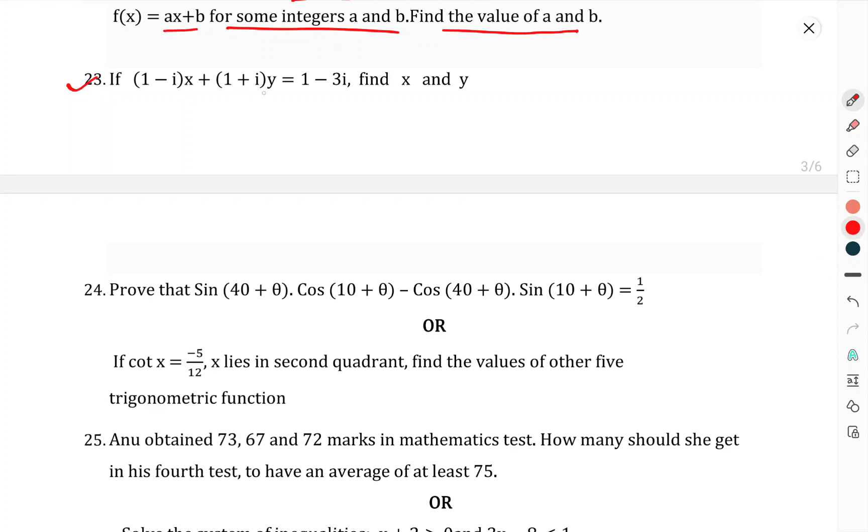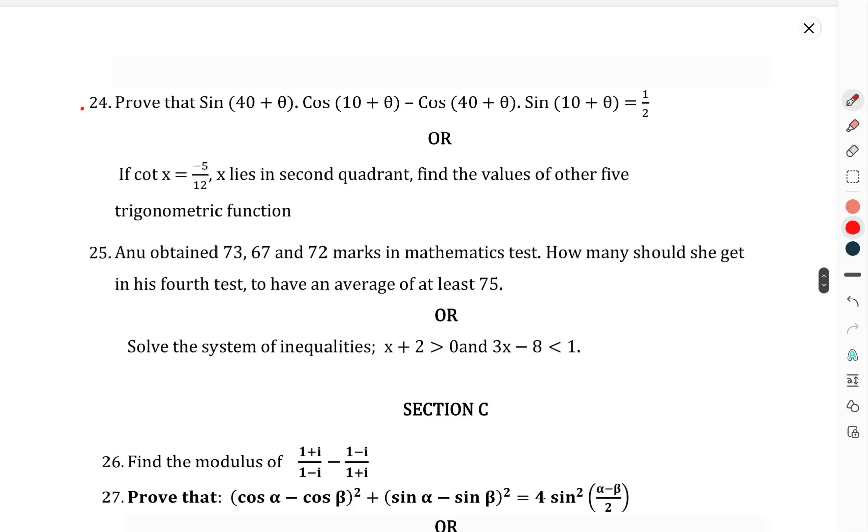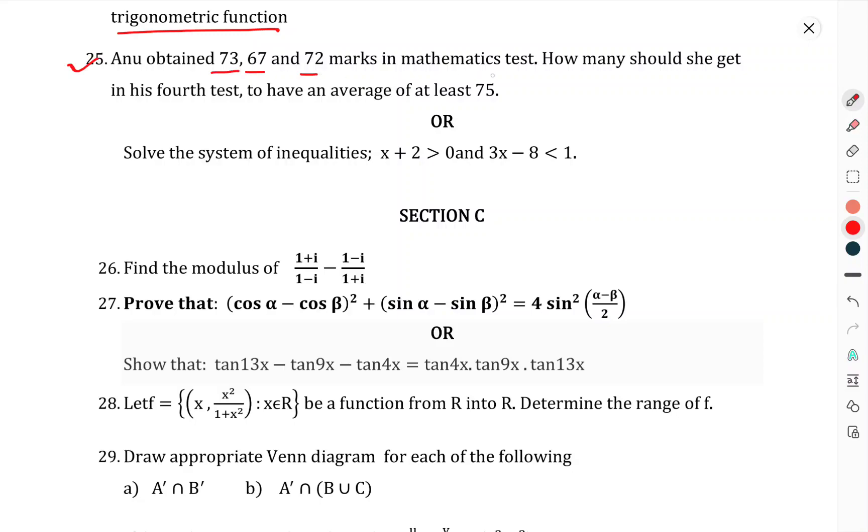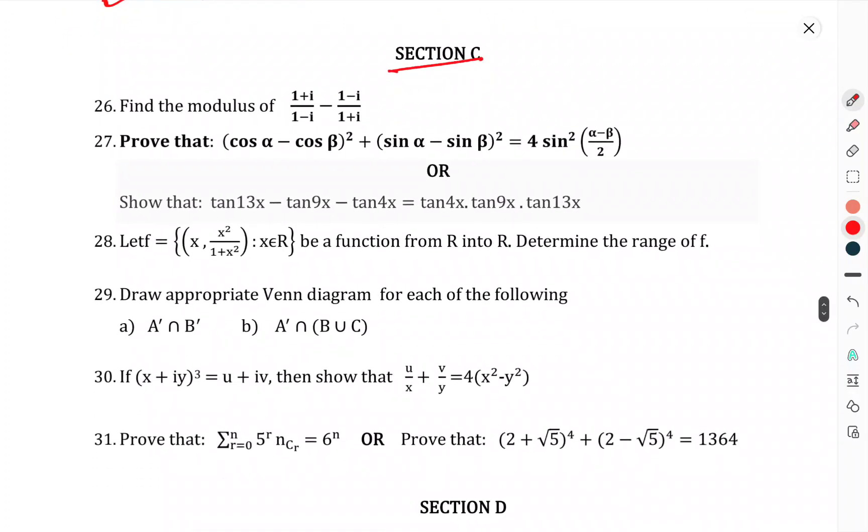Question 23: If (1 - ix)/(1 + iy) equals 1 - 3i, find x and y. Question number 24: Prove that sin(40 + θ)cos(10 + θ) minus cos(40 + θ)sin(10 + θ) equals 1/2. Question 25: If cos x equals -15/12 and x lies in the second quadrant, find the value of the other five trigonometric functions. Question number 26: Anu obtained 73, 67, 72 marks in mathematics. How much should she get in her fourth test to have an average of at least 75?